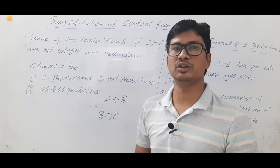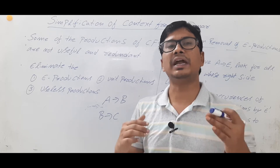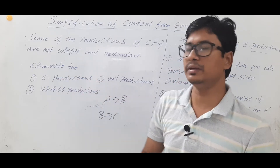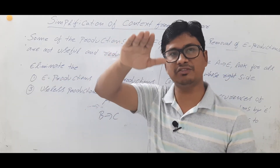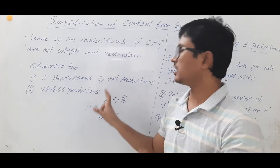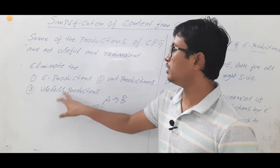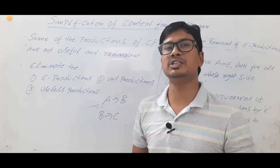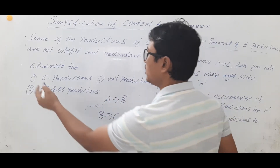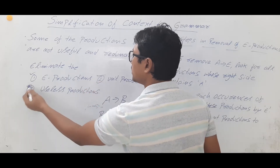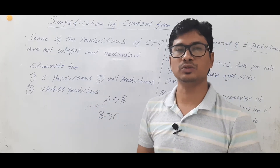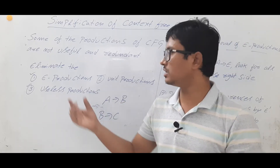We will take examples related to epsilon productions, unit productions, and useless productions so that you understand the concept clearly. Remember: the order of these three steps must be followed — first eliminate epsilon productions, then eliminate unit productions, then eliminate useless productions. That order gives you the simplified grammar.